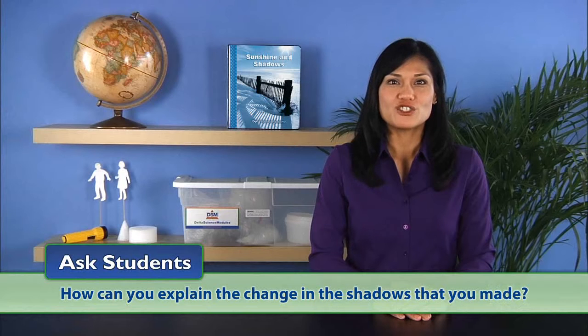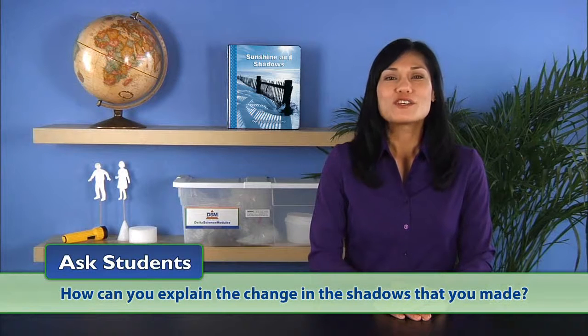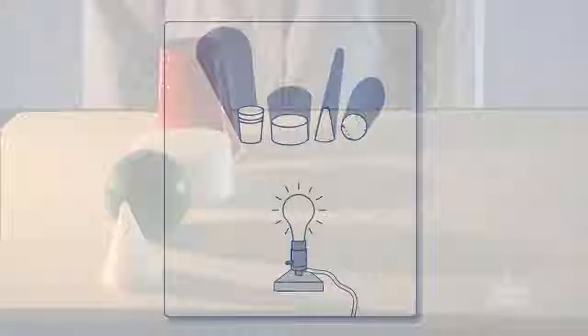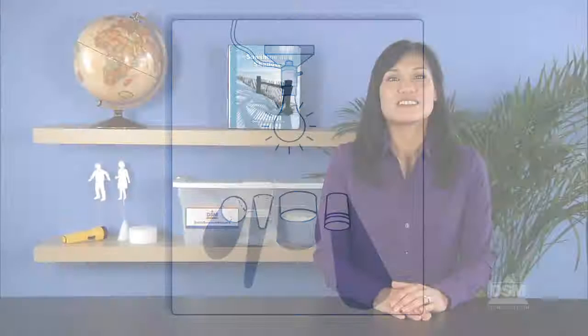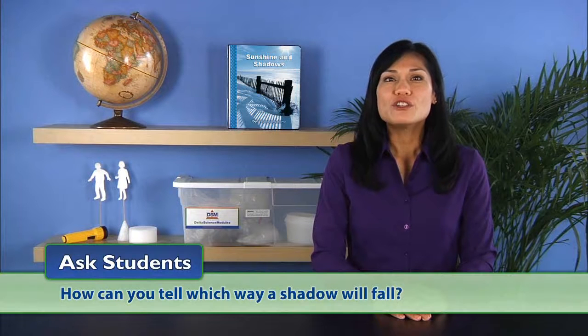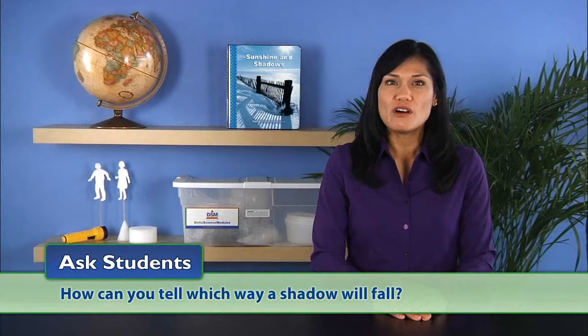Ask students, how can you explain the change in the shadows that you made? Students should say that the shadows moved from one side to the other because the light source was moved from one side to the other. Finally, ask students, how can you tell which way a shadow will fall? Students' responses will vary.